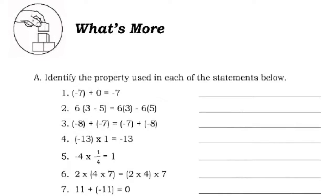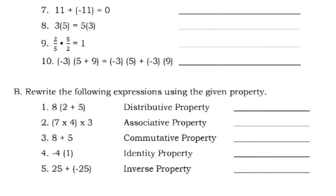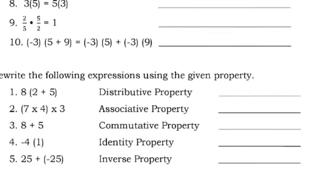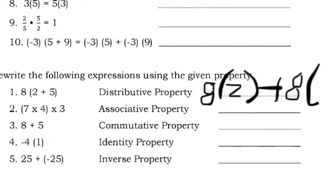Next is what's more: identify the property used in each of the statements below, selecting from the properties discussed earlier. For letter B, rewrite the following expressions using the given property. For example, using the distributive property for number 1, 8 times the quantity of 2 plus 5 can be rewritten as 8 times 2 plus 8 times 5. Try to complete the remaining items on your own.